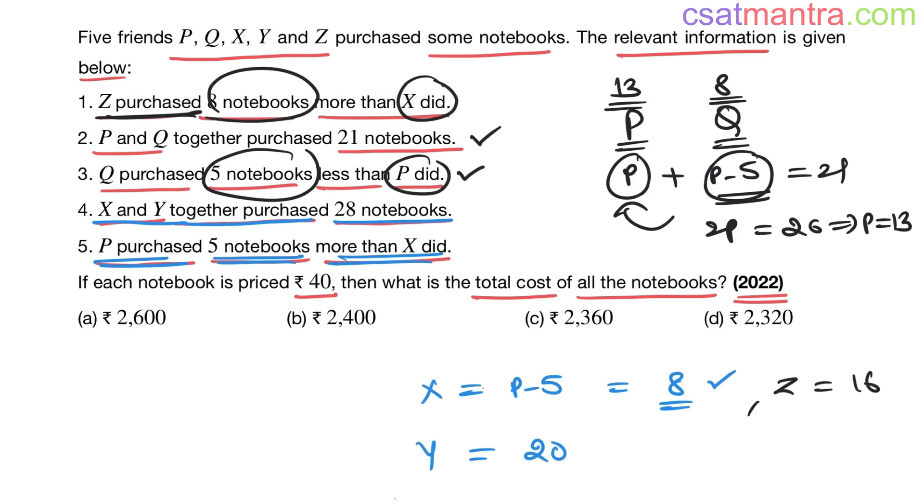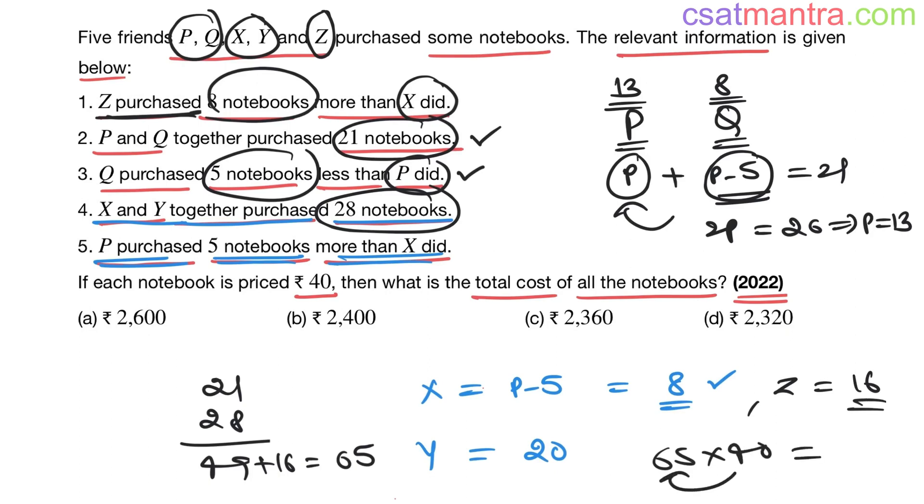So total number of books: P and Q how much? 21. X and Y how much? 28. This is 49. What is the number of books purchased by Z? 16. 49 plus 16 is 65. Now the price: 65 into 40, 6 times 4 is 24, so 2400. Answer should be more than 2400, so the answer is option A. Just multiply and check.